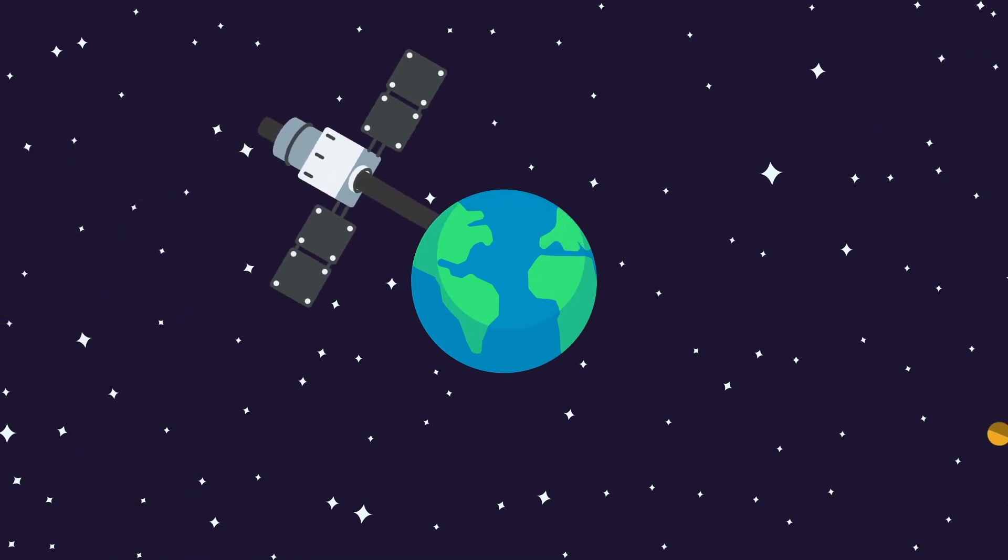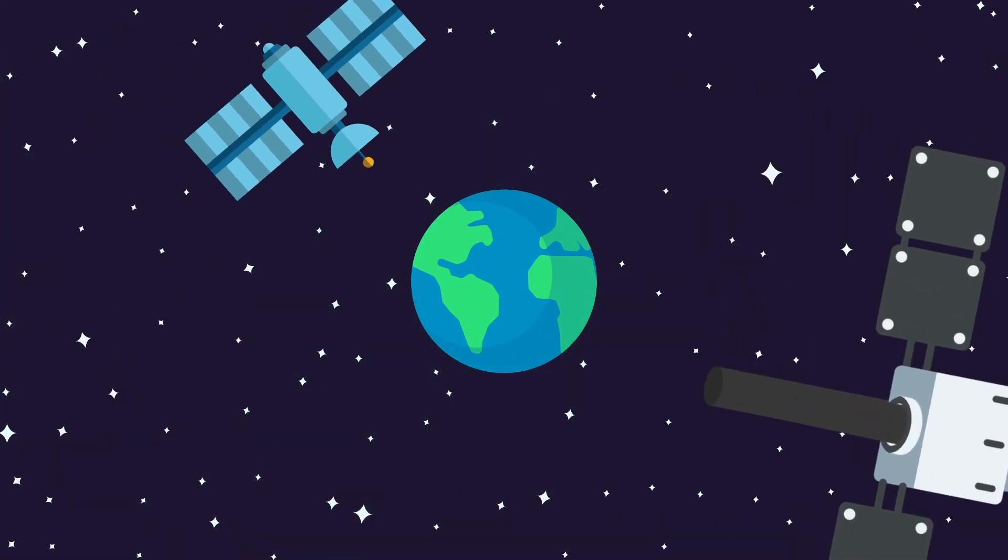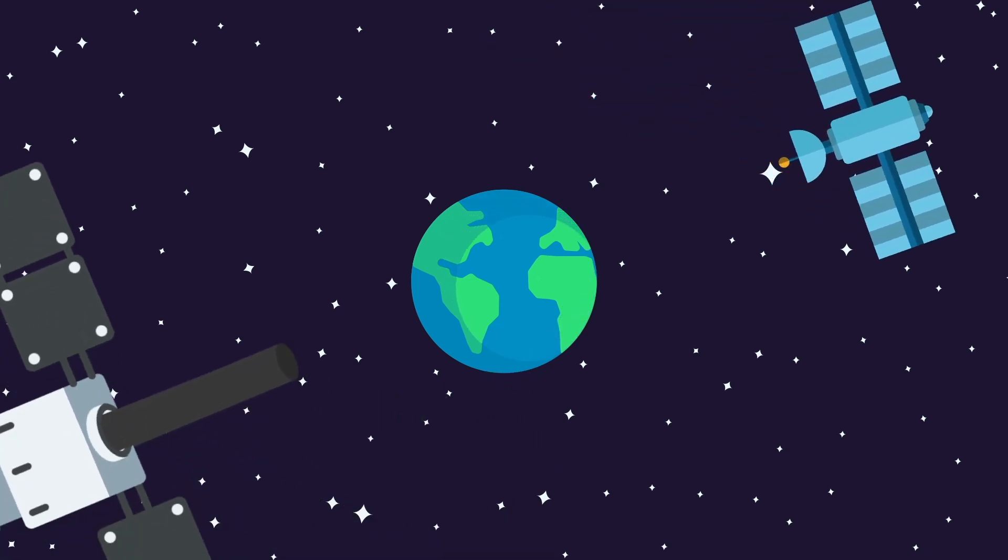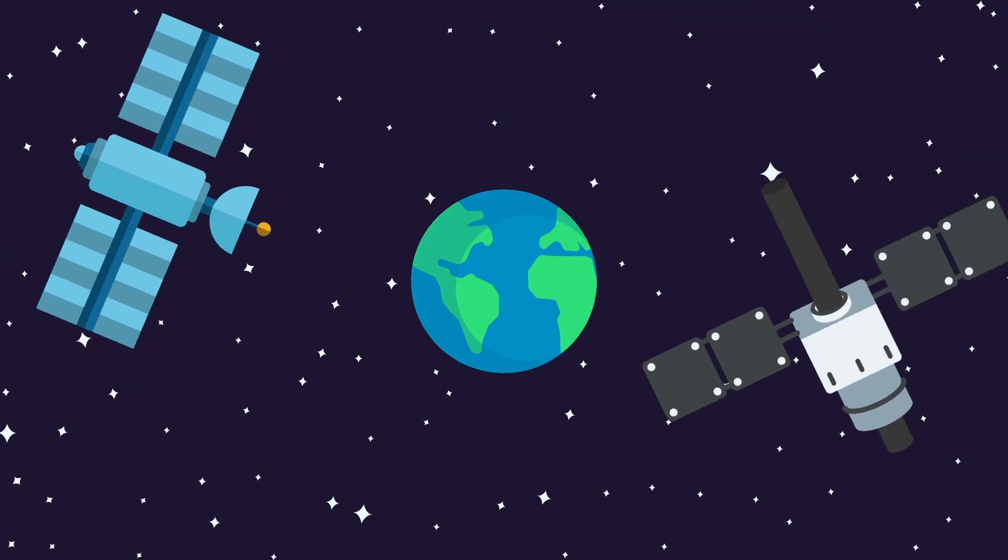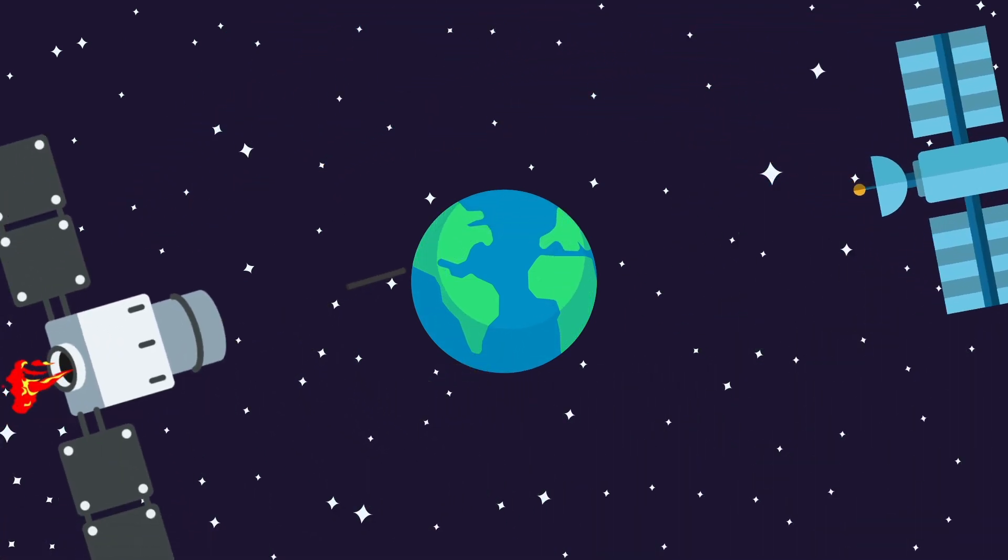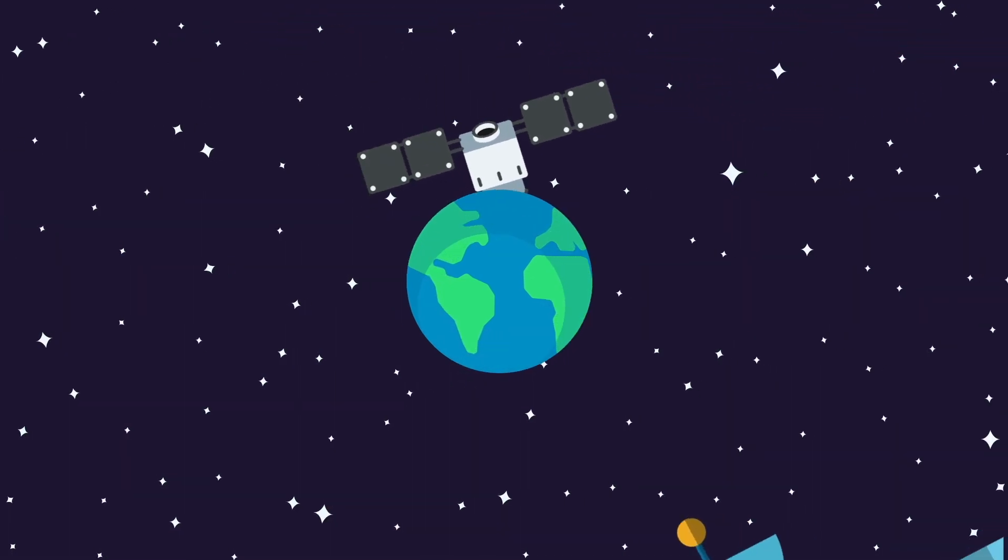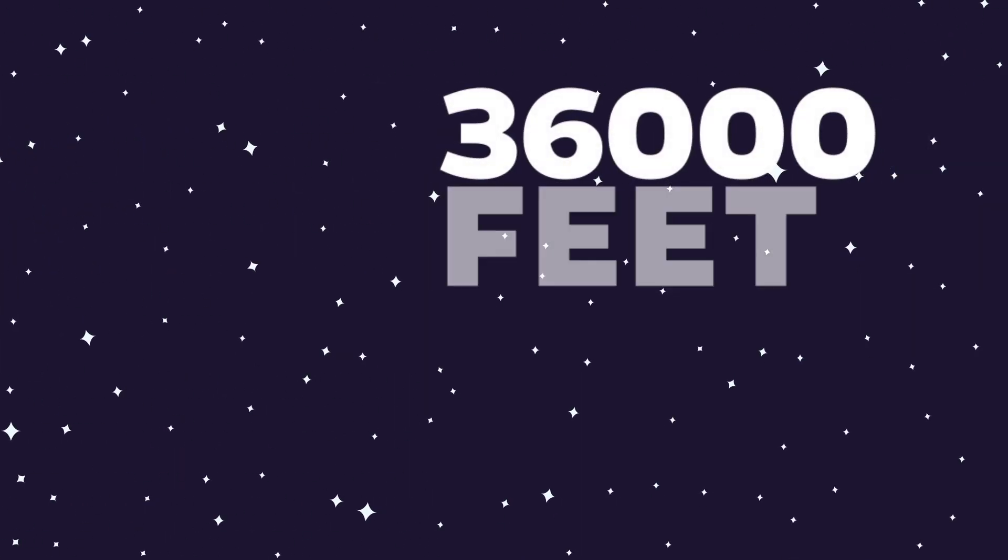It communicates with a second satellite that carries gigantic tungsten metal rods that would be up to 20 feet in length and one foot in diameter. Satellite 1 can instruct satellite 2 to drop one or more of the rods, wherever and whenever it is commanded to. The guided rods fall at a whopping speed of over 36,000 feet per second.